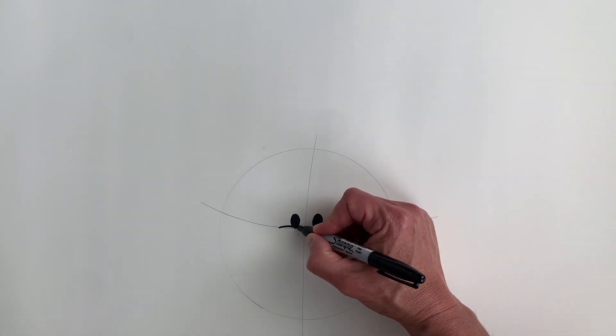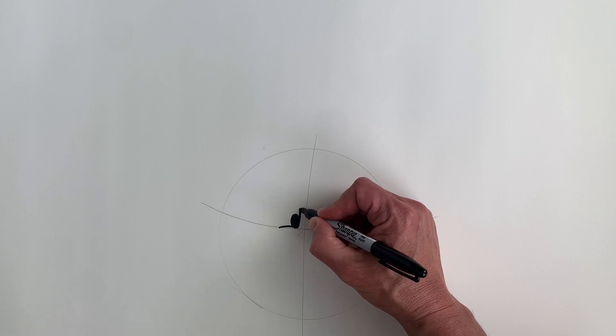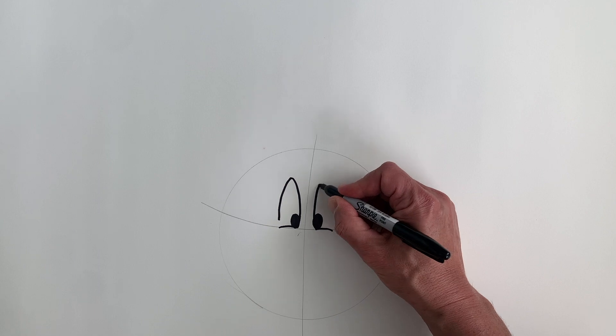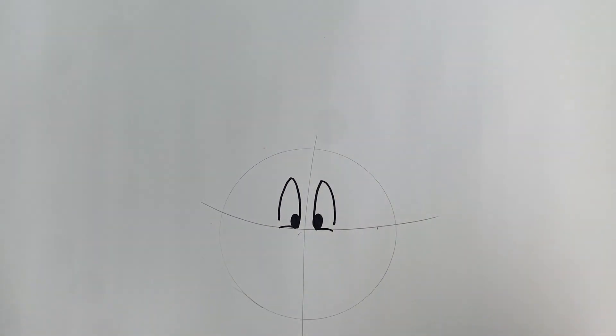Take your marker, put it right here on the edge, and I want you to do one arch here, and on the other side as well. If you need to stop the video to do this, go right ahead, pause it, and when you're ready with the two arches, you're ready to go with the next step.